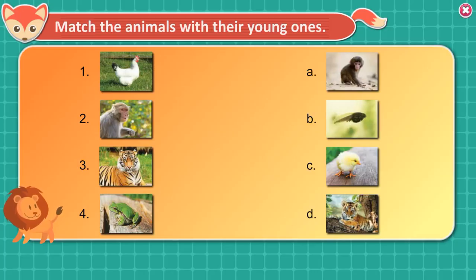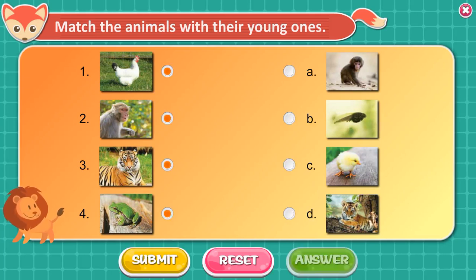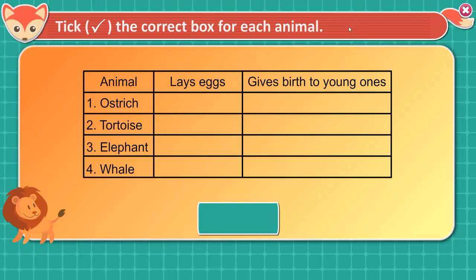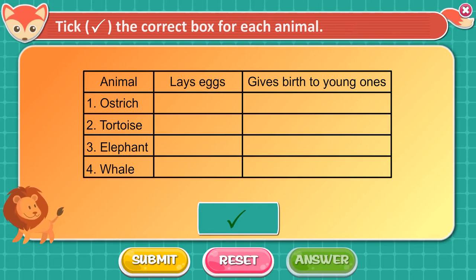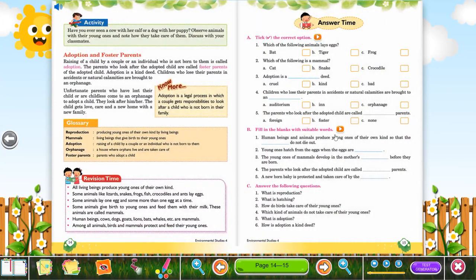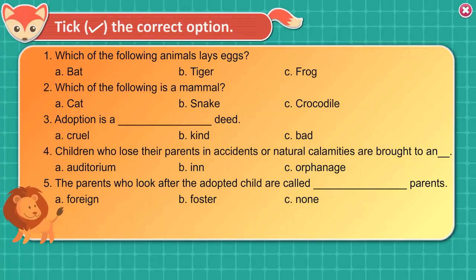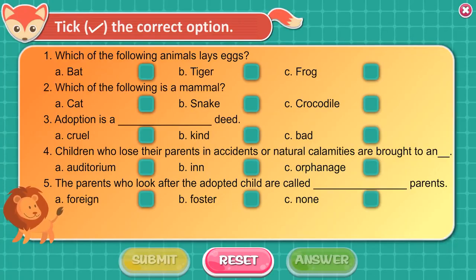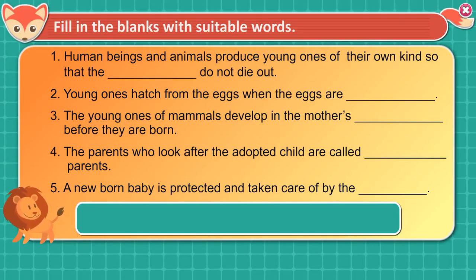Activity: Match the animals with their young ones. Tick the correct box for each animal. Tick the correct option. Fill in the blanks with suitable words.